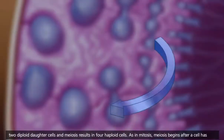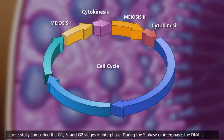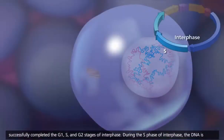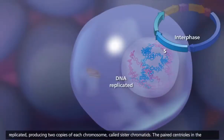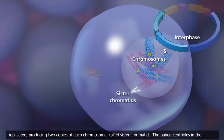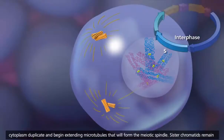As in mitosis, meiosis begins after a cell has successfully completed the G1, S, and G2 stages of interphase. During the S phase of interphase, the DNA is replicated, producing two copies of each chromosome called sister chromatids. The paired centrioles in the cytoplasm duplicate and begin extending microtubules that will form the meiotic spindle.